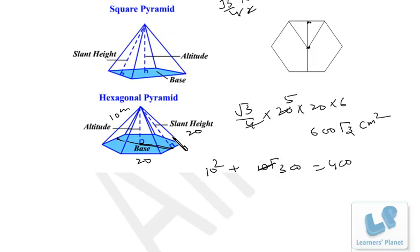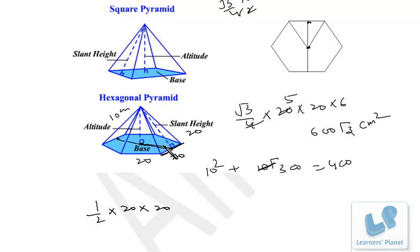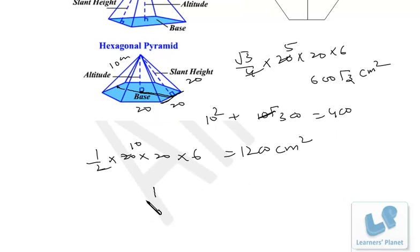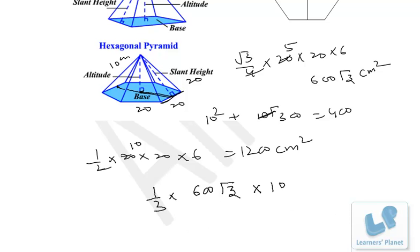The slant height of 20 is the height of each triangular face. Area of one triangular face = ½ × 20 × 20 = 200. There are 6 such triangles on the hexagonal base, so curved surface area = 200 × 6 = 1200 cm². For volume: (1/3) × base area × height = (1/3) × 600√3 × 10, which can be calculated easily.